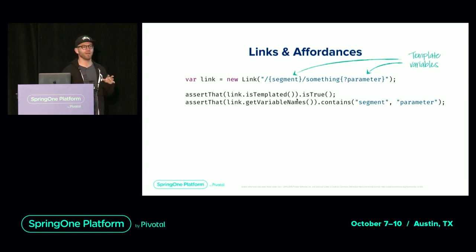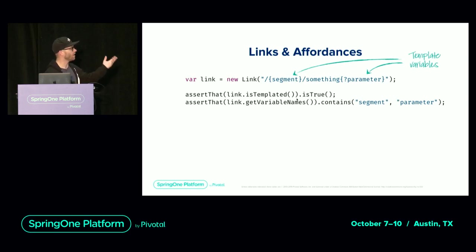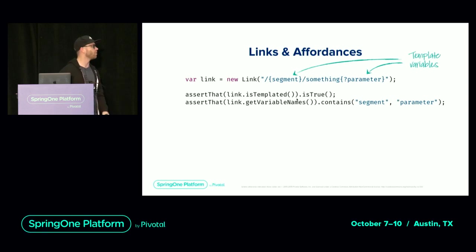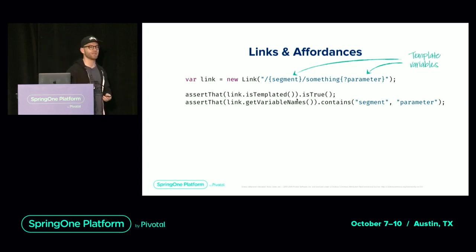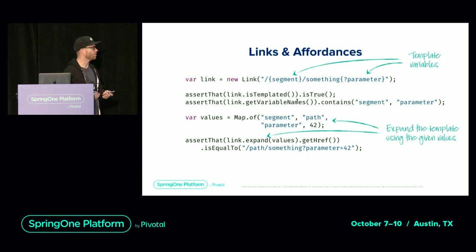URI templates — links that contain placeholders — are also supported. There's a specification that defines path variables, optional query parameters, non-optional query parameters, and so on. There's API to create these links. The key feature is it parses out the parameters so you can interact with them programmatically. You can take a link and add new parameters. If you're receiving a JSON document that uses URI templates, you can easily access and expand those parameters.